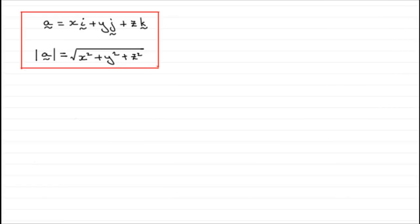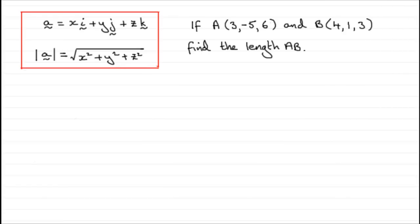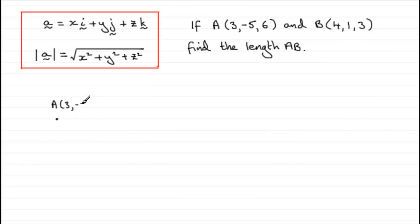Now I've got an example here which uses this idea — a very common type of example. If A has coordinates (3, −5, 6) and B has coordinates (4, 1, 3), find the length AB. To do this I'd suggest you draw a diagram. Many students say they can't draw in three dimensions, but that really doesn't matter — you just put a point down for A at (3, −5, 6), another point B anywhere, with coordinates (4, 1, 3), and mark an origin O.